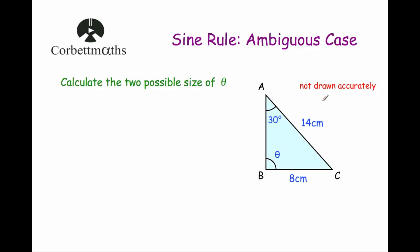So here we've got a triangle ABC. We've got BC is equal to 8 cm, AC is equal to 14 cm, angle BAC is 30 degrees and angle ABC is equal to theta. We've been asked to calculate the two possible sizes of theta.